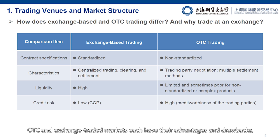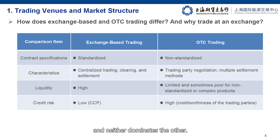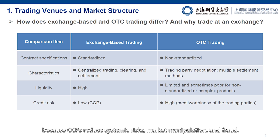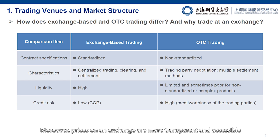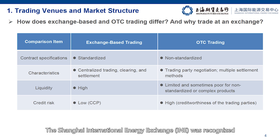OTC and exchange-traded markets each have their advantages and drawbacks, and neither dominates the other. But regulatory reforms are now leaning towards centralized clearing, because CCP has reduced systematic risks, market manipulation and fraud, as well as helped maintain the overall stability of the market. Moreover, prices on an exchange are more transparent and accessible to a wide range of market participants. The Shanghai International Energy Exchange was recognized as a qualifying central counterparty in early 2019.